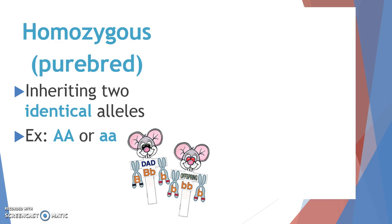This brings us to more important vocabulary. The word homozygous — think 'homo' meaning same — describes a genotype where a person has inherited two identical alleles. A synonym for homozygous is purebred. You'll see both words used interchangeably in practice problems. There are two ways to write a homozygous genotype: two capital alleles or two lowercase alleles.